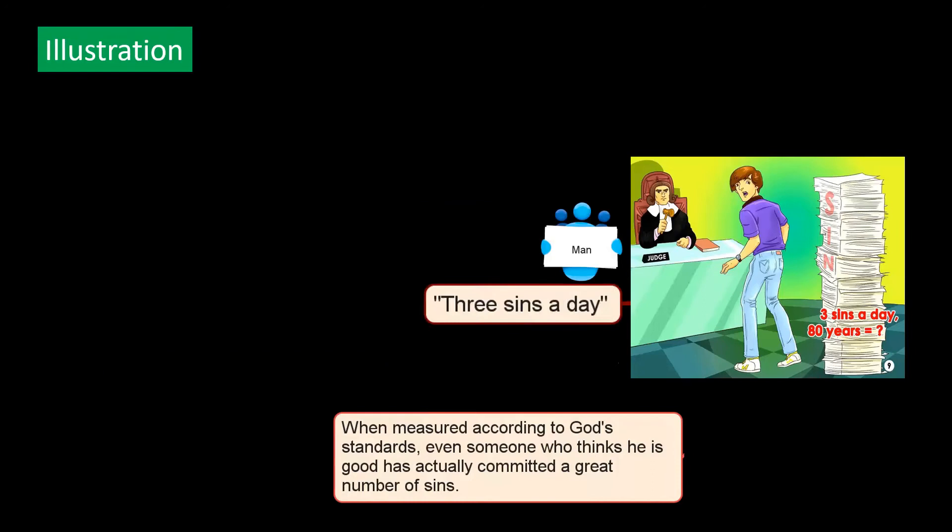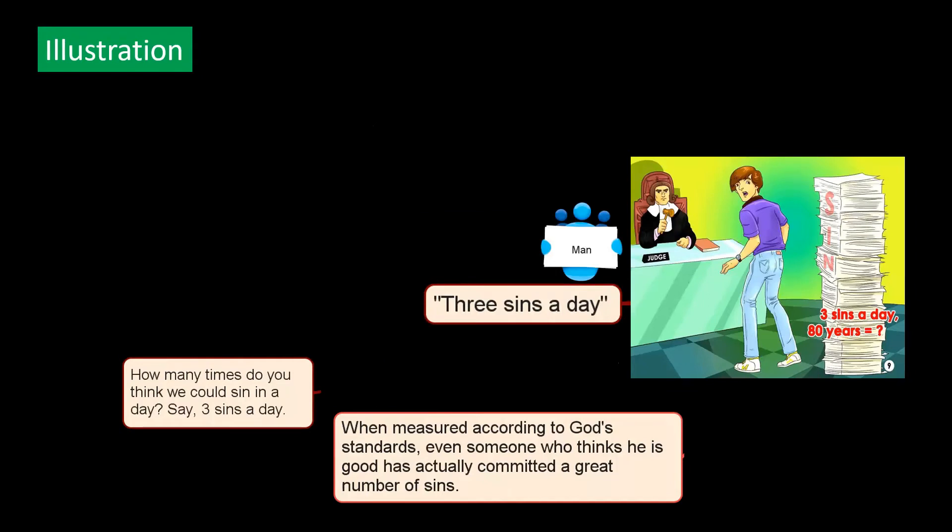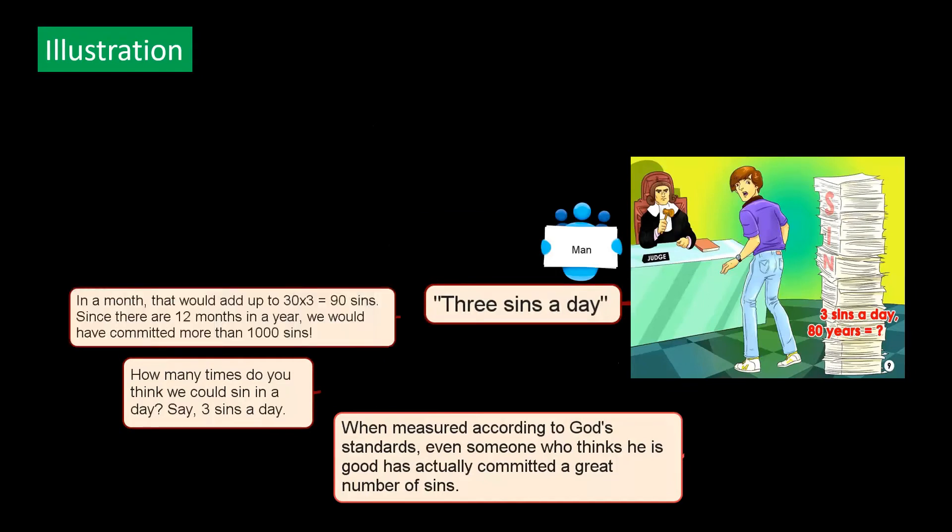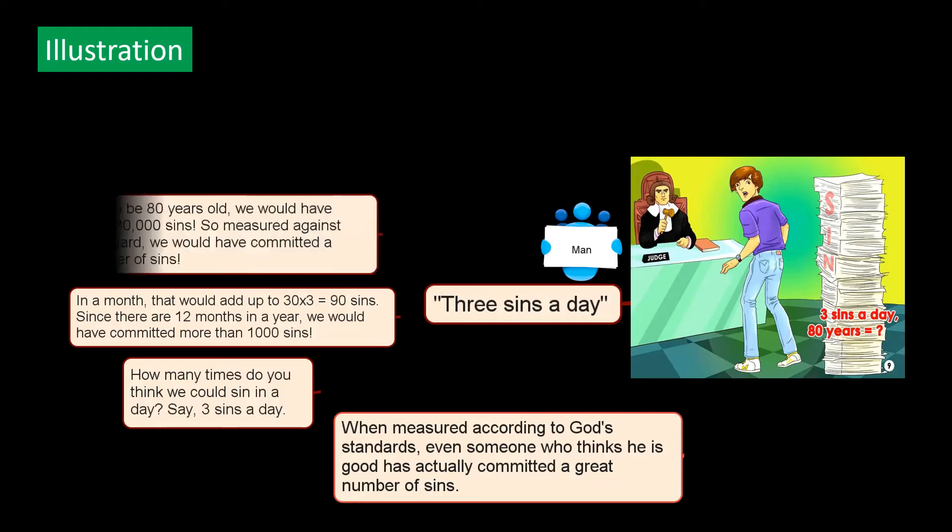Let me just illustrate. Let's say a good person. How many times do you think he could sin in a day? Maybe three sins a day, given the five categories of sins. In a month, that would add up to 30 times 3, 90 sins. Since there are 12 months in a year, you multiply that by 90, we would have committed more than 1,000 sins in a year.